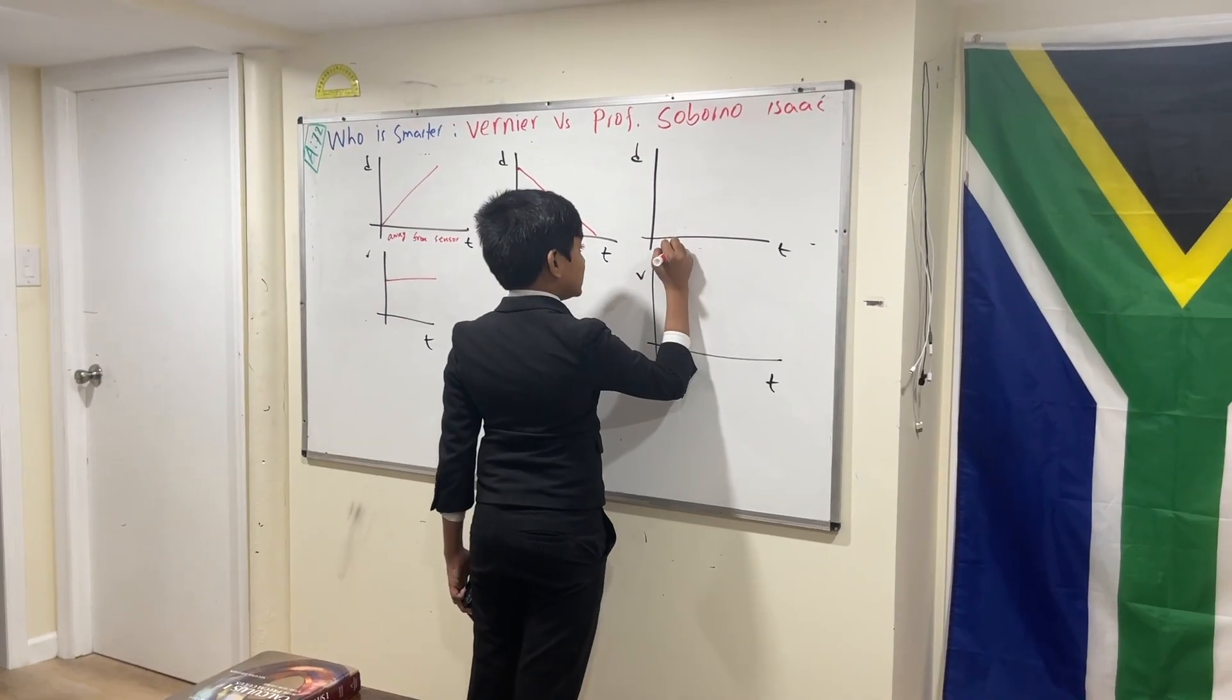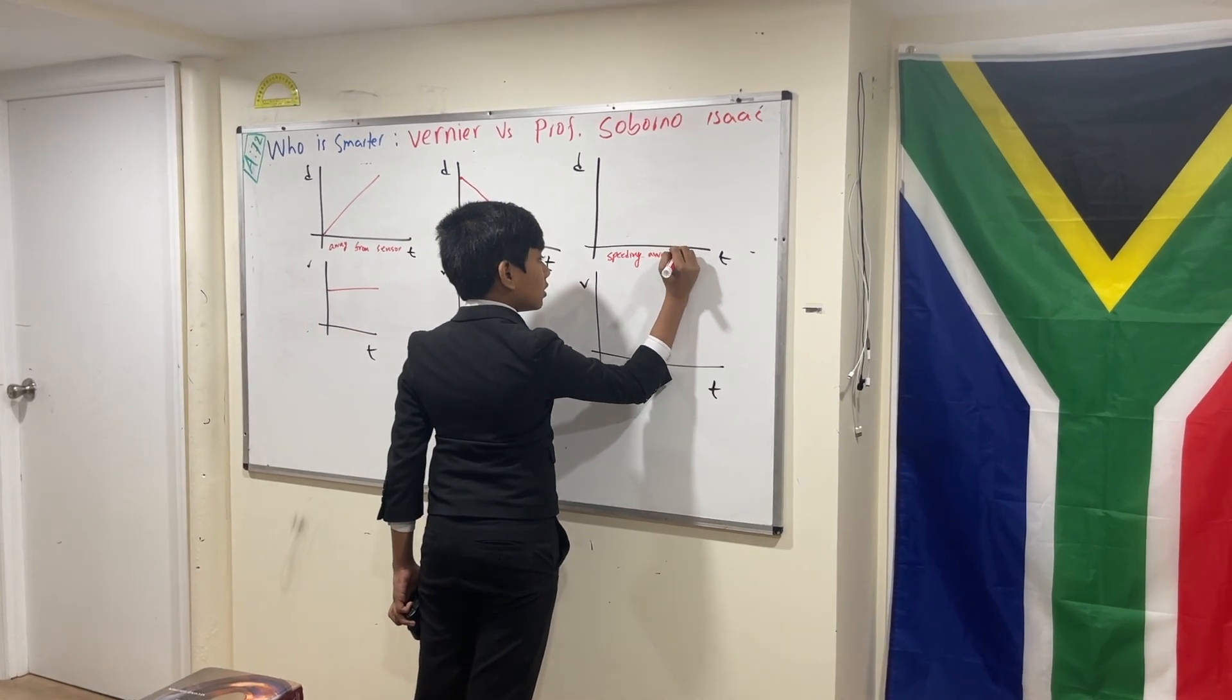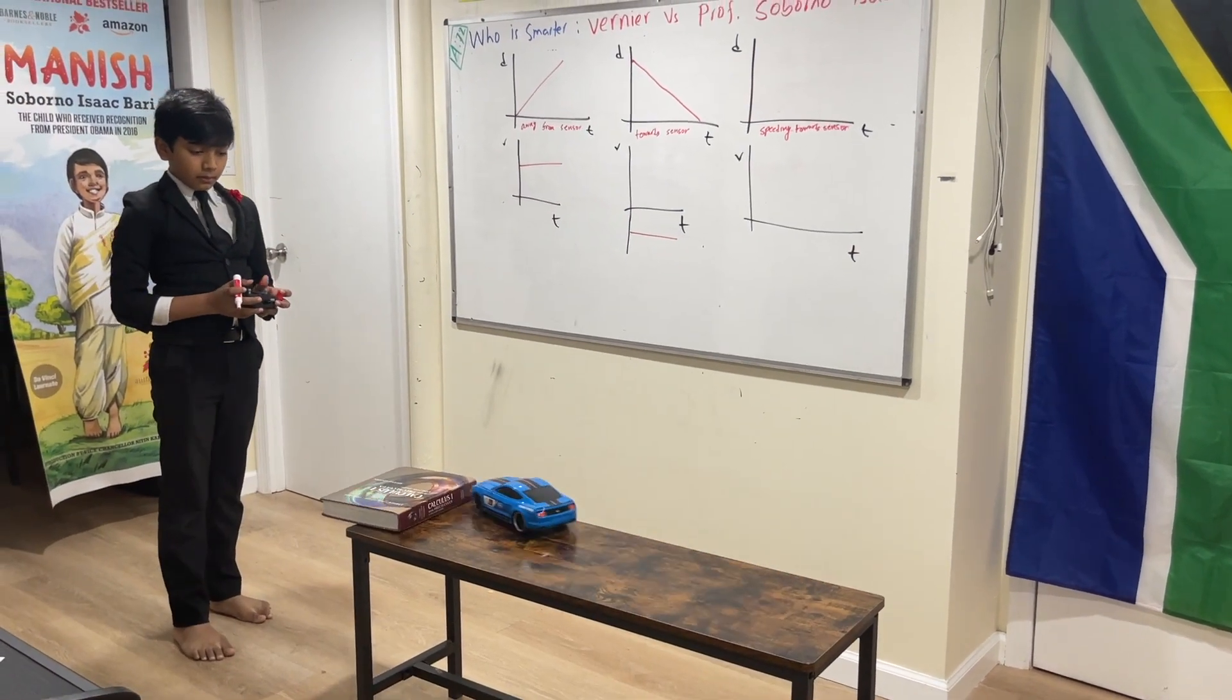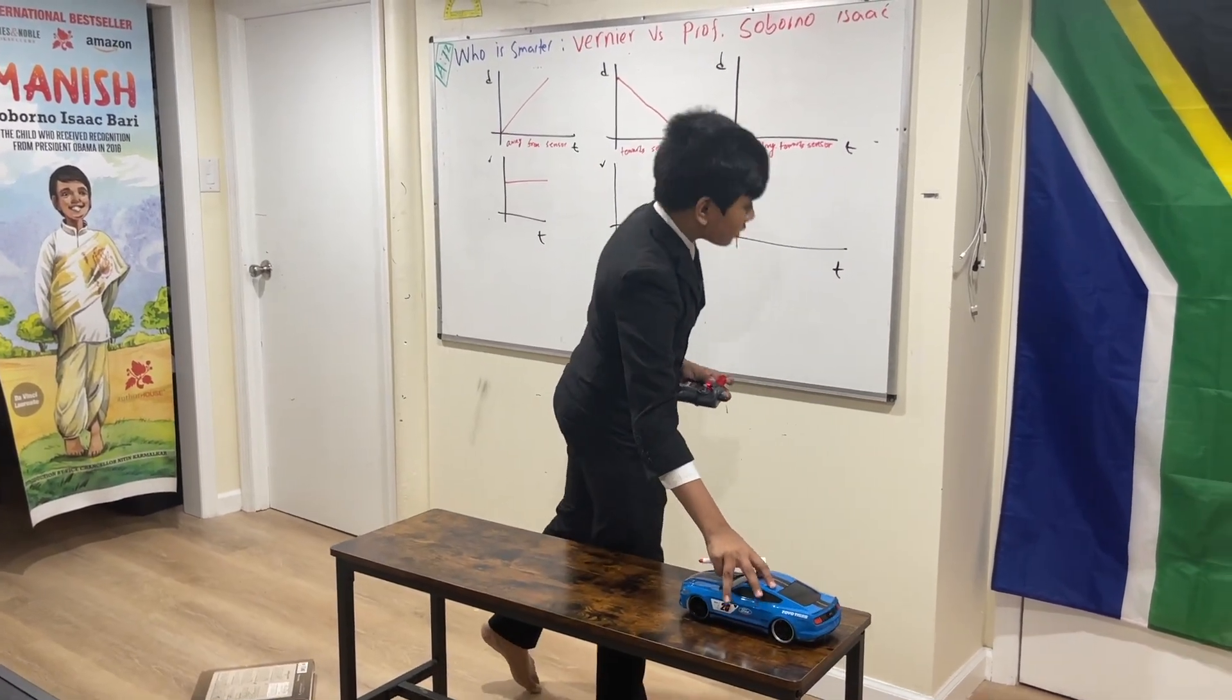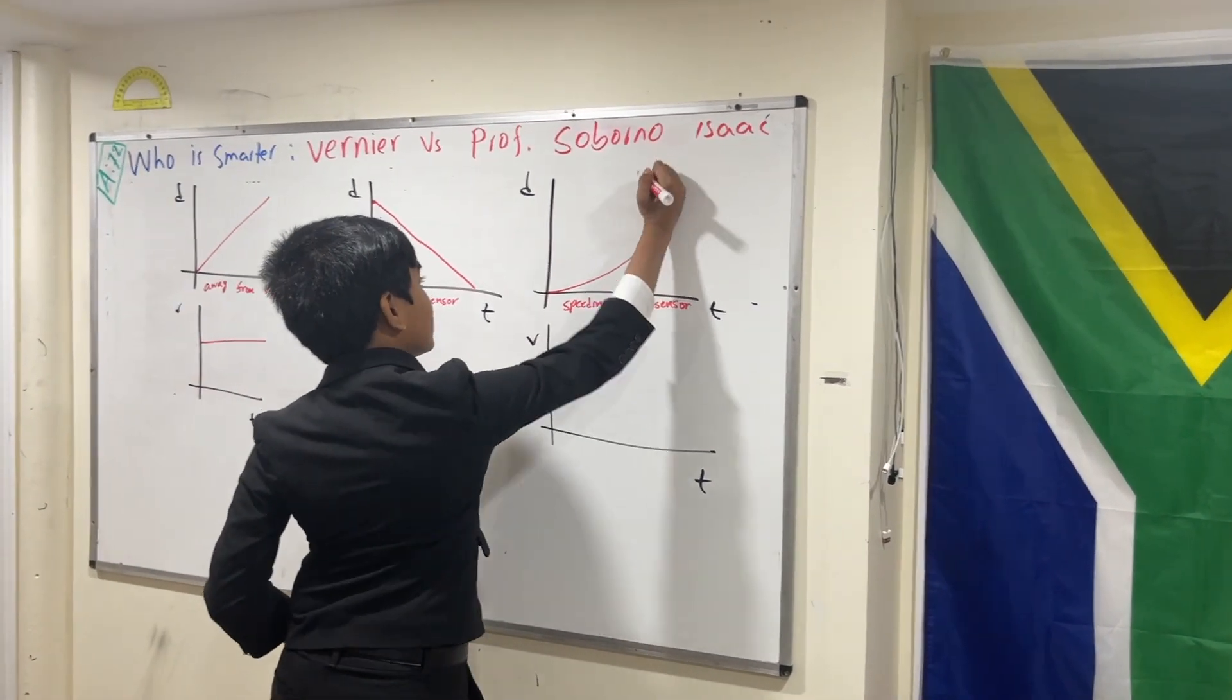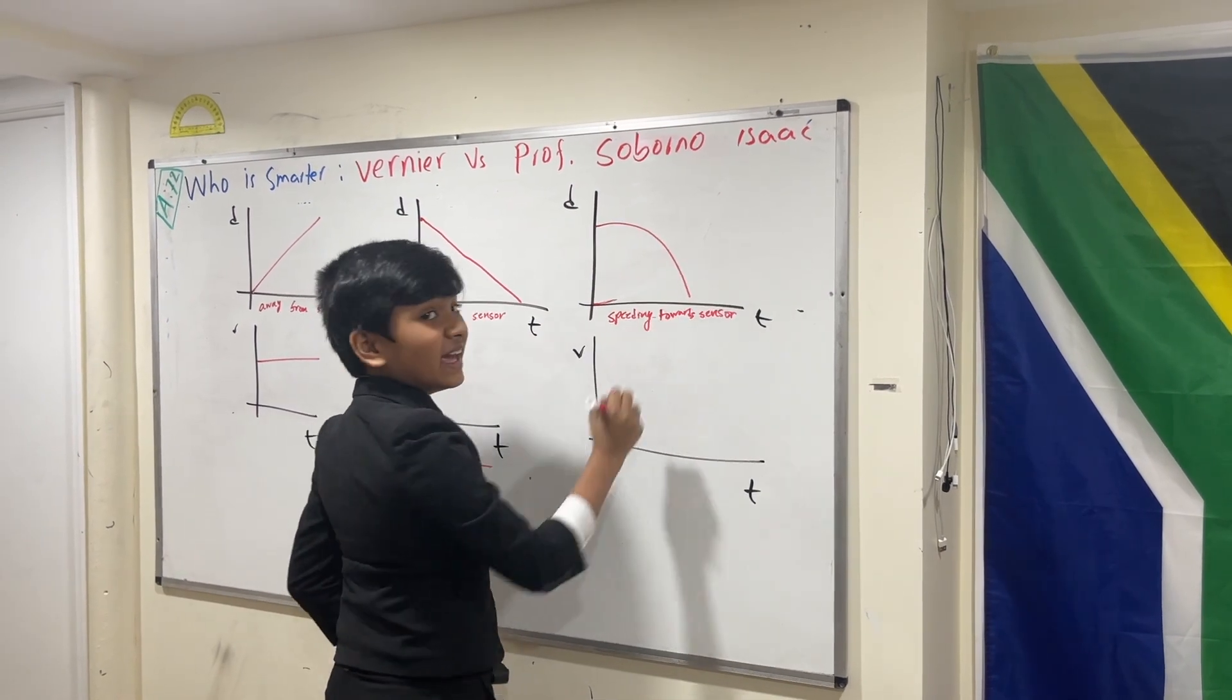This one is speeding up. Away from center. 3, 2, 1. Alright, cool. So, you saw it was speeding towards me. So, actually, it wouldn't look like this. It would rather look like this.